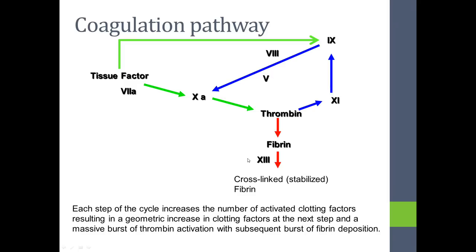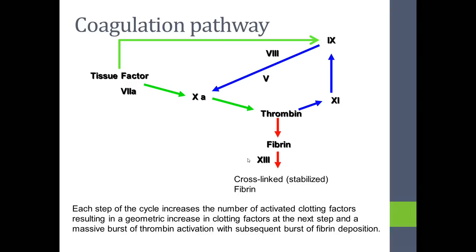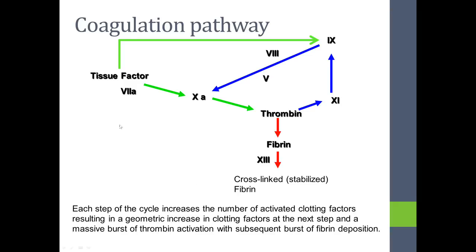The coagulation pathway, in terms of enzymes, is a complicated one. The combination of tissue factor and activated factor VIIa activates factor IX, and also activates factor X, creating factor Xa. Factor Xa activates thrombin from prothrombin. Thrombin activates fibrin from fibrinogen, and then fibrin strands are stabilized and cross-linked by factor XIII.